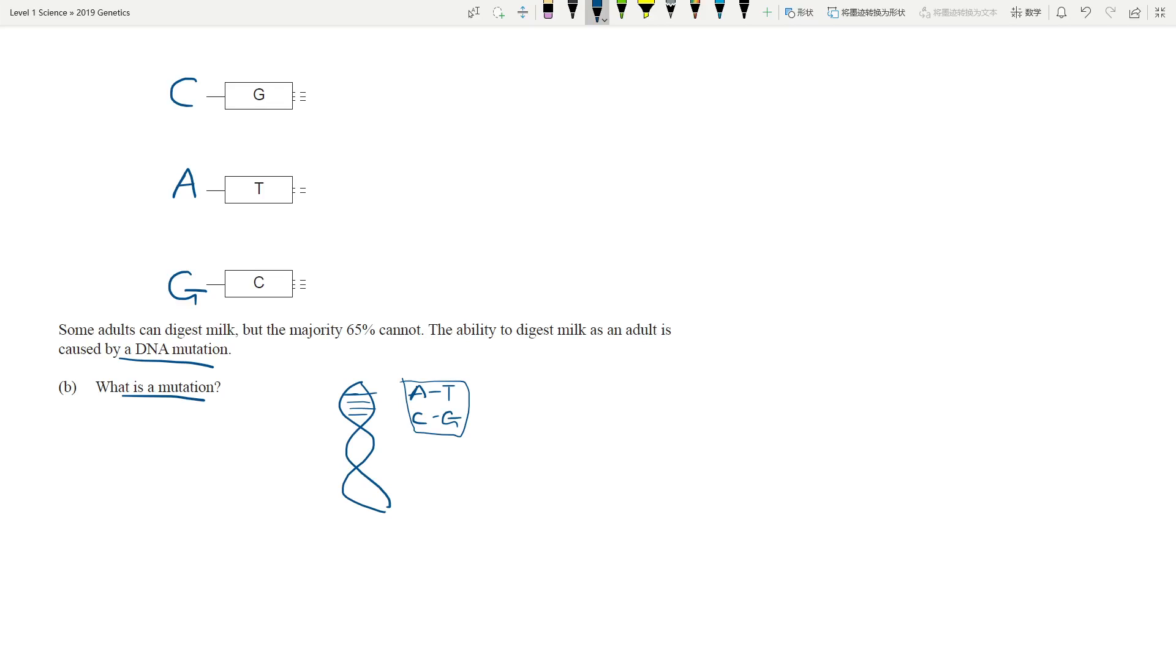The order of the base sequence determines what particular protein is being made. What mutation does is it changes this particular order. You can either have new bases being added in, you can have them swapped around, or you can have things being deleted.